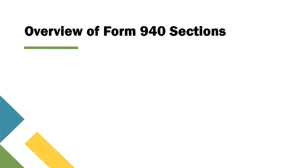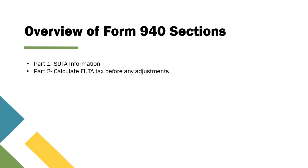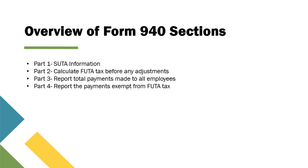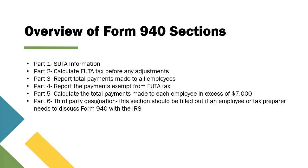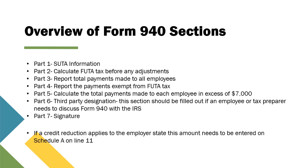Form 940 is organized as follows: Part 1 contains business information; Part 2 is where the employer calculates FUTA tax before any adjustments; Part 3 is where total payments to all employees are reported; Part 4 is where payments exempt from FUTA tax are reported; Part 5 is where the employer calculates total payments made to each employee in excess of $7,000; Part 6 is third-party designation, filled out if an employee or tax preparer needs to discuss Form 940 with the IRS; and Part 7 is the signature section. If a credit reduction applies to the employer's state, the amount is entered on Schedule A.